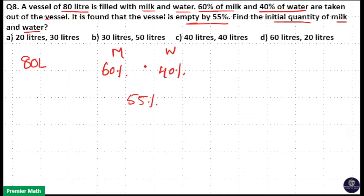60 percentage taken out means emptying the vessel. 40 percentage taken out means emptying the vessel. Now as a result of these two processes the vessel becomes empty by 55 percentage. So you can use the allocation method here.